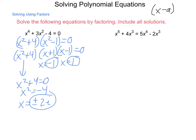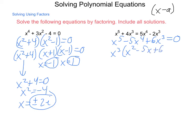x to the fifth plus 4x cubed equals 5x to the fourth minus 2x cubed. It's easiest to solve these when they're equal to zero, so let's move everything to the side with the highest exponent. This is a quintic equation. What we would end up with is x to the fifth minus 5x to the fourth plus 6x cubed equals zero — I subtracted 5x to the fourth and added 2x cubed to both sides. Now, all these terms have an x cubed that I can factor out, leaving x squared minus 5x plus 6 equals zero.